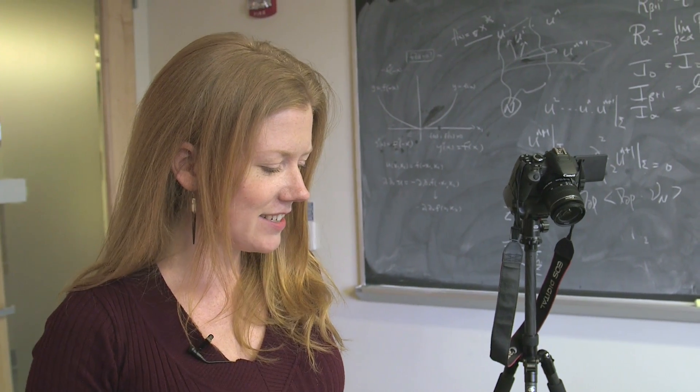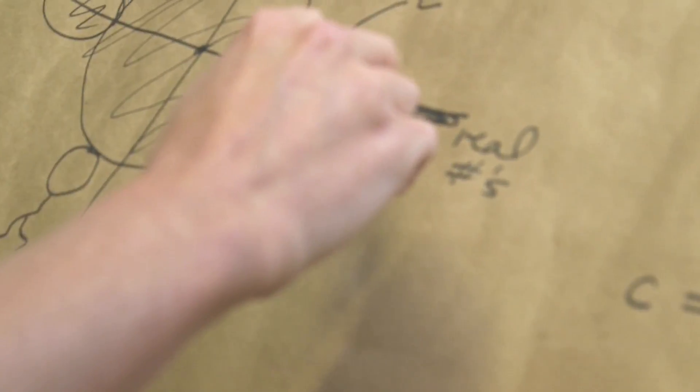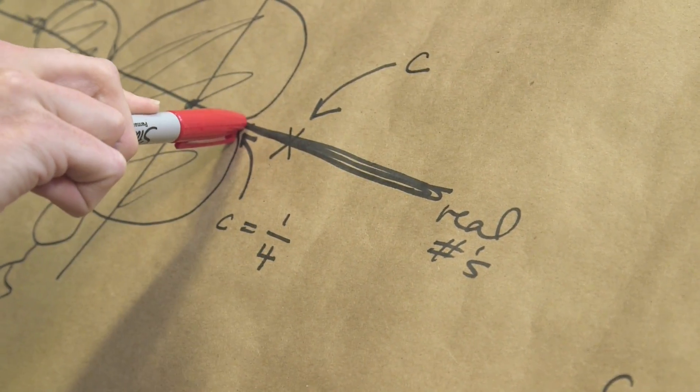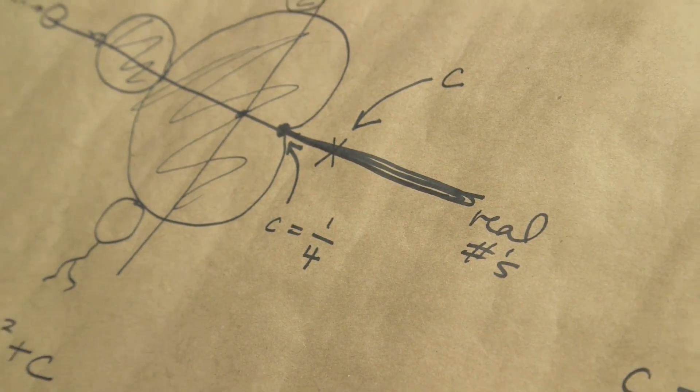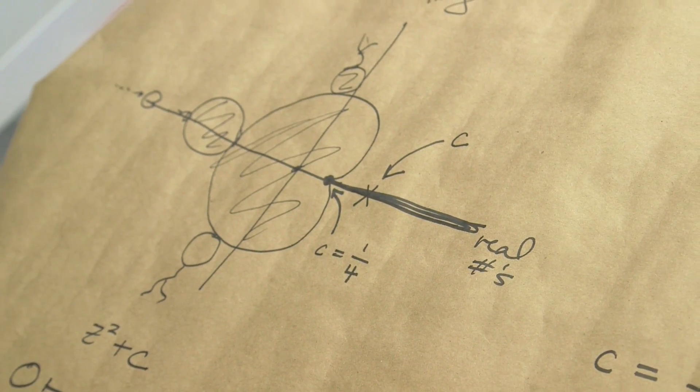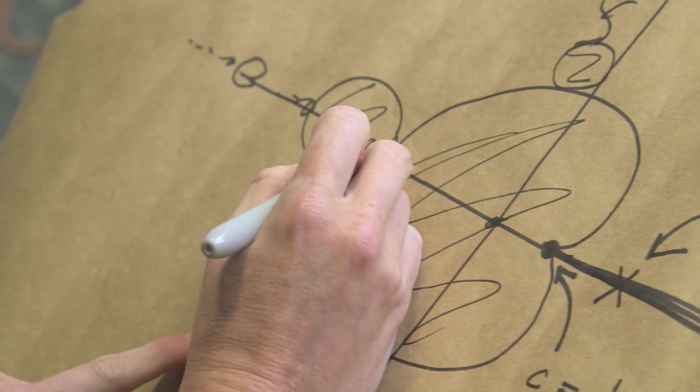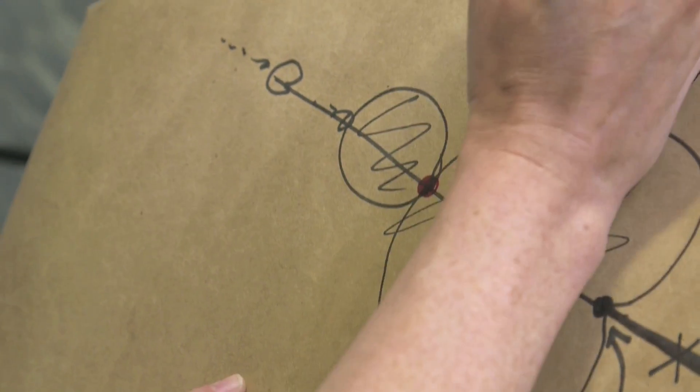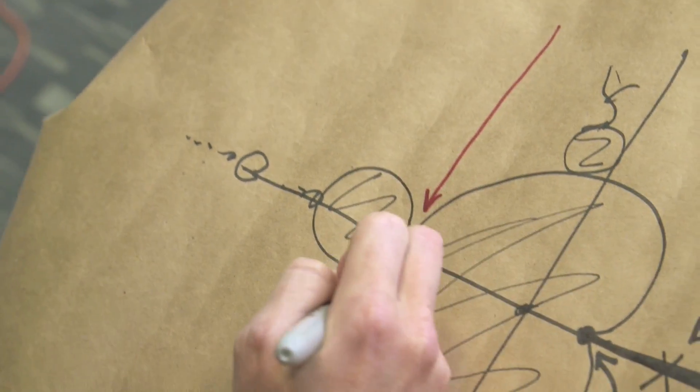It's also worth noting that I came in here to the Mandelbrot set along the real axis towards the cusp, right? But you can do the same trick and play the same game with other points here. It's also known that this happens if you come in towards this connection point. It happens here too.